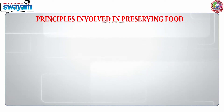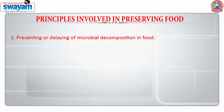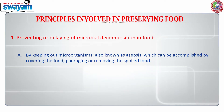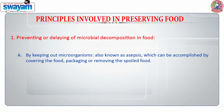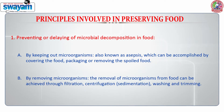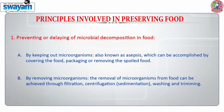Key principles involved in preserving foods include preventing or delaying microbial decomposition. This can be achieved by keeping out microorganisms — also known as asepsis — which can be accomplished by covering food, packaging, or removing the spoiled food. It can also be achieved by removing microorganisms through filtration, centrifugation, washing, and trimming.